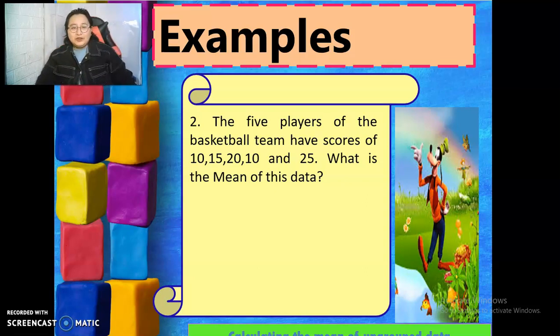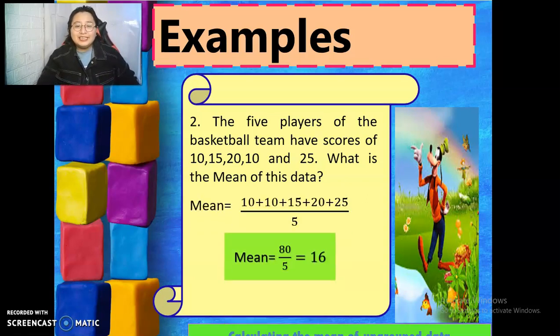We have 80 plus 81 plus 83 plus 84 divided by 4 is equal to 82. Hence, the average data or the mean of the grades of grade 7 students is 82. How about number 2? The 5 players of the basketball team have scores of 10, 15, 20, 10, and 25. What is the mean of this data? We need to add the datas. And then after adding, we divided by the number of data points. We have 4. Therefore, the answer is 80 divided by 5 equals 16.